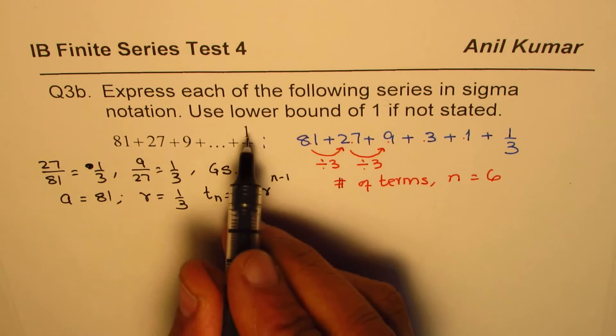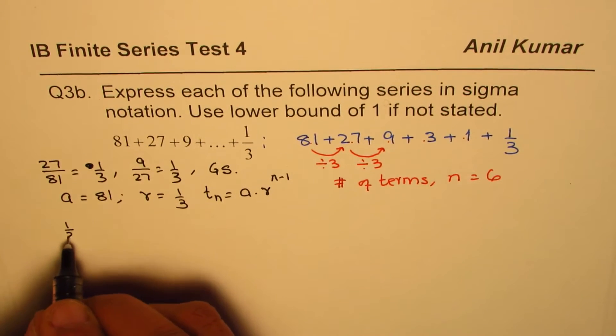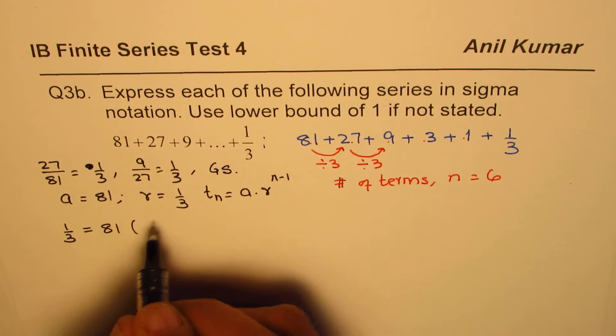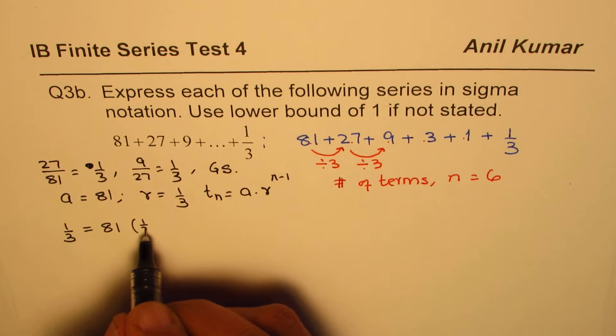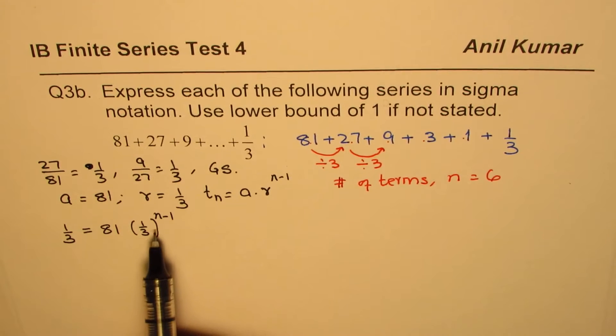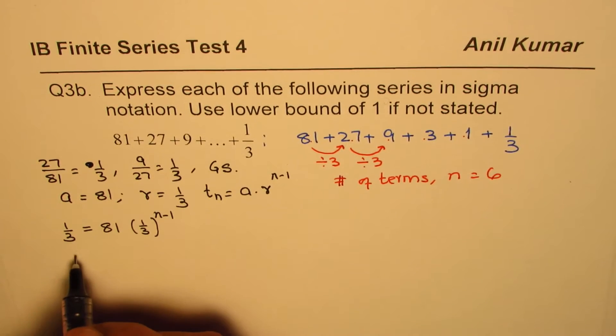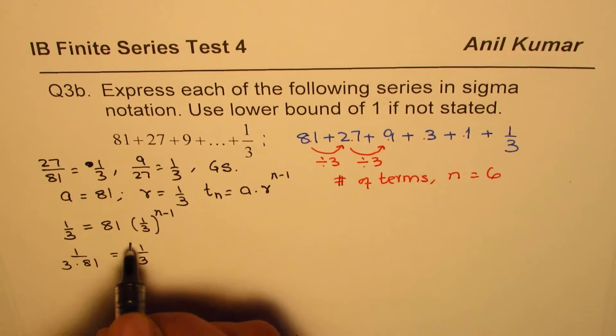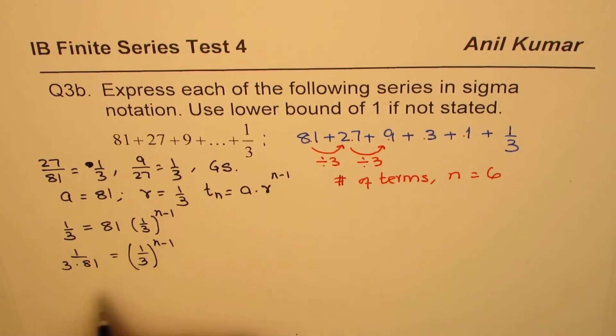So the nth term is 1 over 3. We will divide by 81, so it comes in the denominator equals to 1 over 3 to the power of n minus 1.